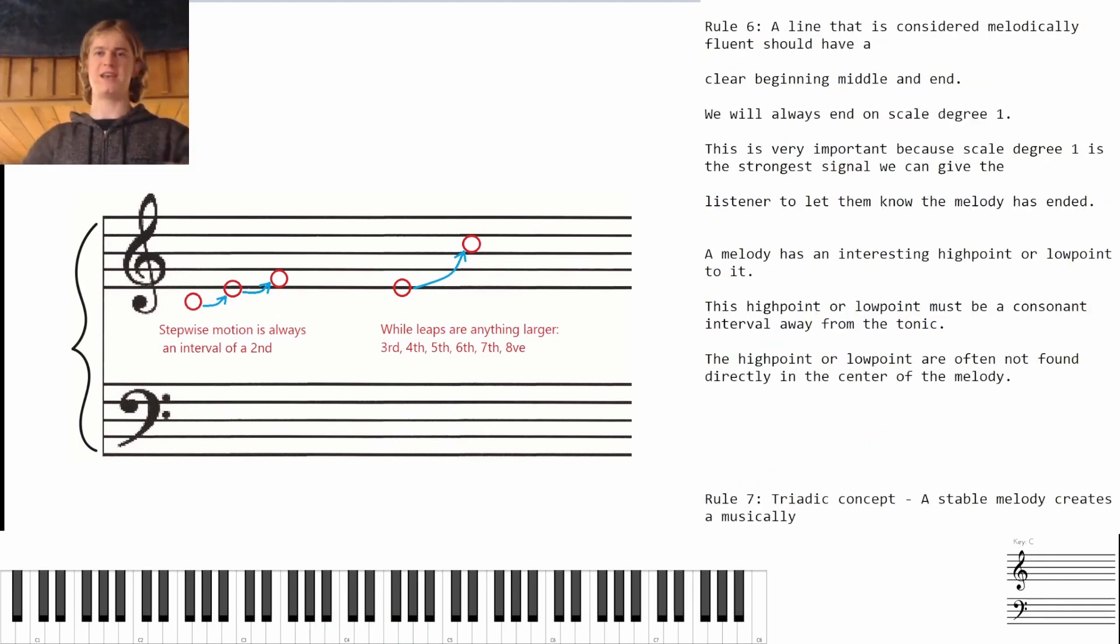Rule number six: a line that is considered melodically fluent should have a clear beginning, middle, and an end. We will always end on scale degree one. This is very important because scale degree one is the strongest signal that we can give the listener to let them know that the melody has ended. Another thing to look for is that the melody has an interesting high point or a low point to it. This high point or low point must be a consonant interval away from the tonic.